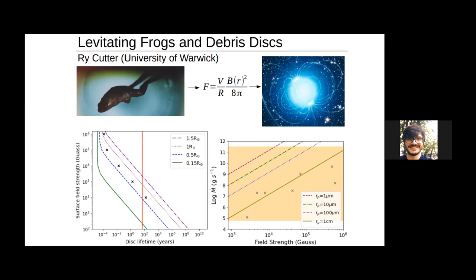In the top left there, you see a levitating frog — it's being levitated through the principle of diamagnetic levitation. What we wanted to do was apply this force to tidally disrupted planetesimals around magnetic white dwarfs, essentially marrying what Tim was just talking about and Boris's talk earlier. Our key results are that we find we can significantly reduce disk lifetimes — shown in the bottom left plot — with a general effect based on the tidal disruption distance. The closer you get to the white dwarf, the stronger the effect of the magnetic field on the dust.